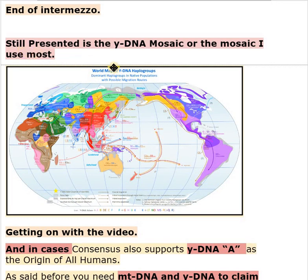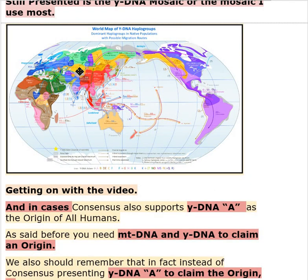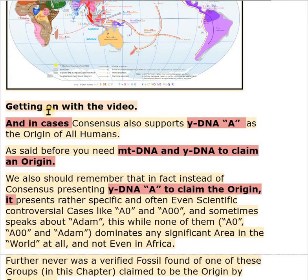Presented is the YDNA mosaic — the mosaic I use most. I use YDNA more than I use mtDNA. Getting on with the video: in cases, consensus also supports YDNA as the origin of all humans. As I said, an origin has both an mtDNA and a YDNA.